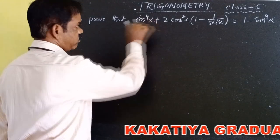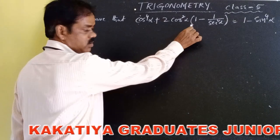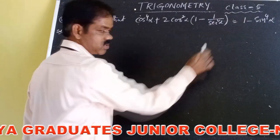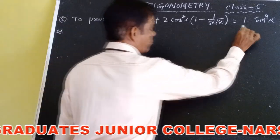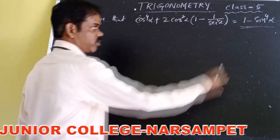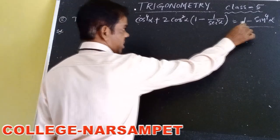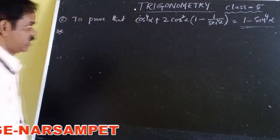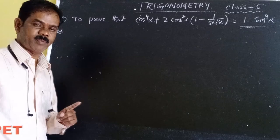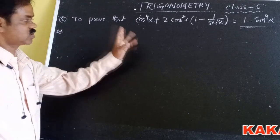Second proof problem: Prove that cos⁴α + 2cos²α(1 - 1/sec²α) = 1 - sin⁴α. We have to prove this using identity properties and reciprocals. It's very simple and can be solved easily.